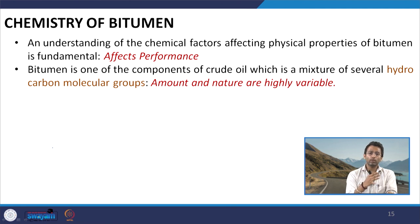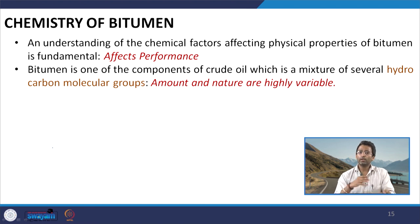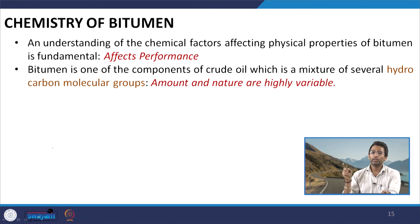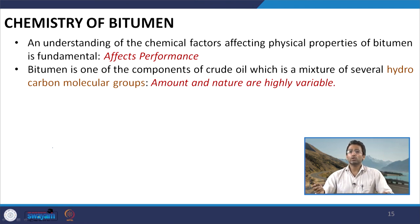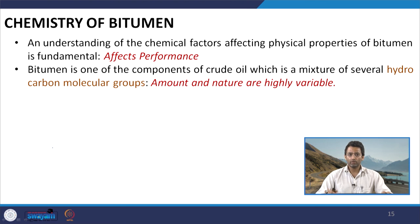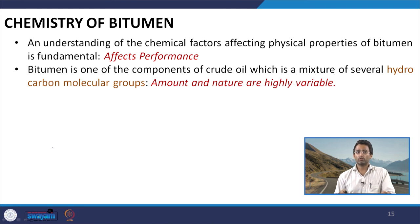Each crude oil from different sources is unique in itself and is composed of a complicated mixture of hydrocarbons. There can be hundreds and thousands of such hydrocarbon species inside the crude oil and therefore in the bitumen. The amount and nature of the hydrocarbon which we are trying to analyze is highly variable in bitumen, and this is one reason that researchers still struggle to clearly explain the chemical composition of the bitumen.